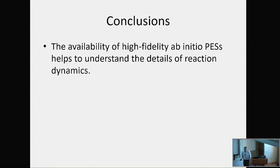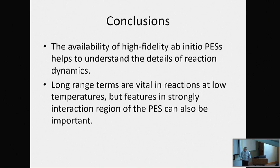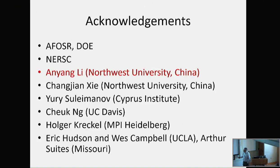Let me summarize what I've told you today. We can now calculate chemically accurate potential energy surfaces, and that allows us to understand the detail of chemical dynamics. The long-range term is of course important — everybody knows that. But the features in the short-range, strong-interaction region can also be very important, as demonstrated in these examples. I'd like to acknowledge the funding agencies — Air Force and the DOE. Computation is done mostly at NERSC. And this is the person who did most of the work, now a professor at a Chinese university, along with a bunch of other collaborators. Thank you very much for your attention.